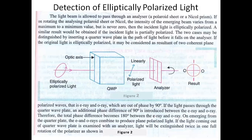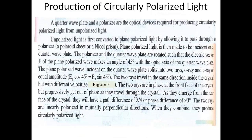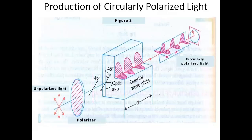In the next part of the lecture, we are going to see how circularly polarized light can be produced. Here also, we need a quarter wave plate and a polarizer as the optical devices required. Unpolarized light is first passed through the polarizer to produce plane polarized light. It is then allowed to pass through a quarter wave plate at an angle of exactly 45 degrees with the optical axis.